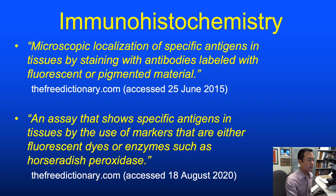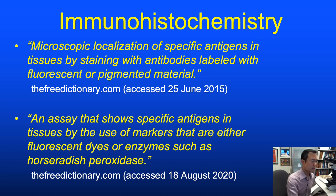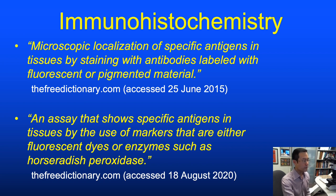Now let's look at immunohistochemical stains. Histochemical stains involve chemical reactions where the reaction product depends on the nature of the chemical interaction. With IHC, it's a more stereotypical, highly specific reaction: the microscopic localization of specific antigens in tissue by staining with specific antibodies labeled with fluorescent or pigmented material, such as fluorescent dyes or horseradish peroxidase.